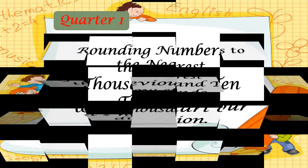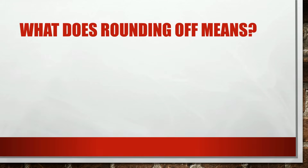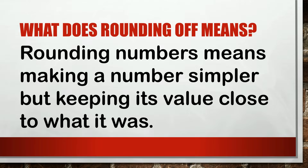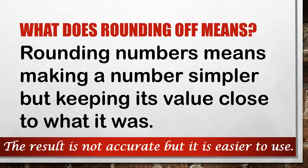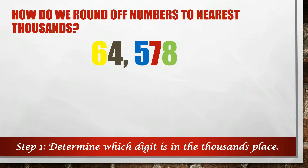Rounding numbers to the nearest thousands and ten thousands. I know you're wondering — what does rounding off mean? Rounding a number means making a number simpler, but keeping its value close to what it was. The result is not accurate, but it is easier to use. How do we round off numbers, most especially to the nearest thousands?